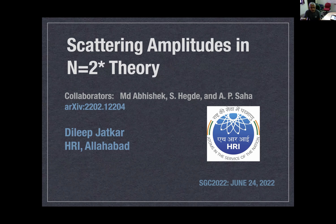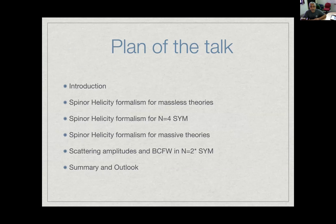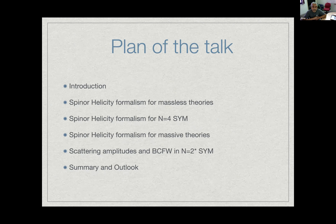Let me start by presenting the plan of the talk. I'll give an introduction and talk about spinor-helicity formalism in general for massless theories — that's where the formalism originated. Then I'll briefly discuss how it is used in N=4 super Yang-Mills theory, then talk about its extension to massive theories. After that, I'll apply it to N=2* super Yang-Mills theory, in which we studied scattering amplitudes and derived the BCFW recursion relation. Then I'll summarize.